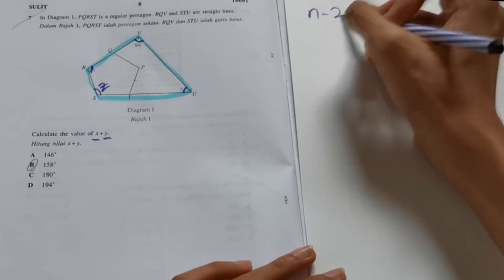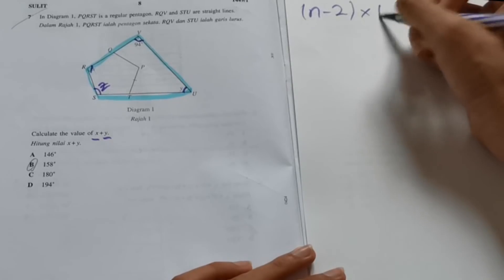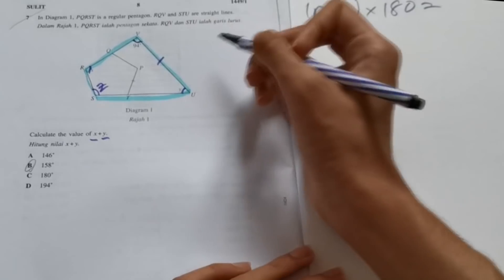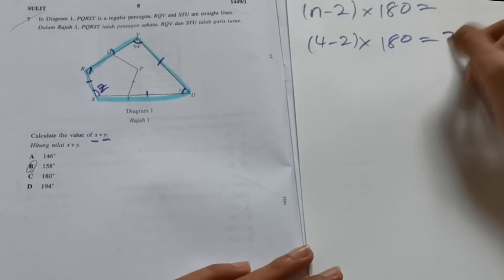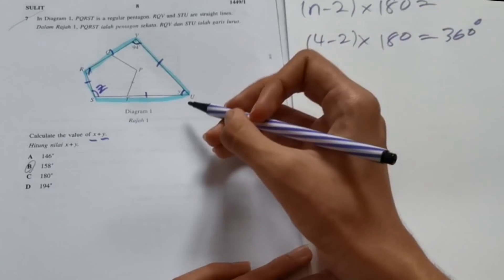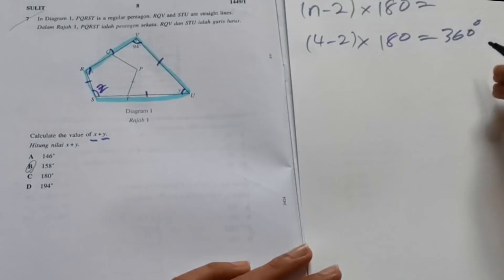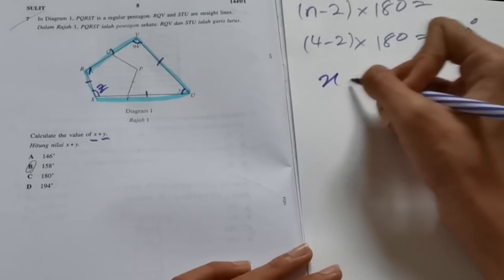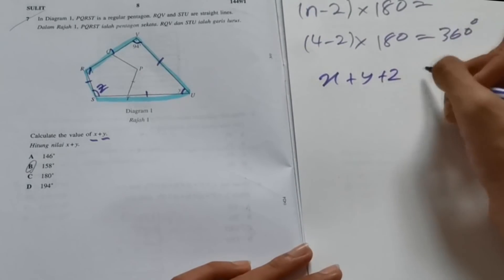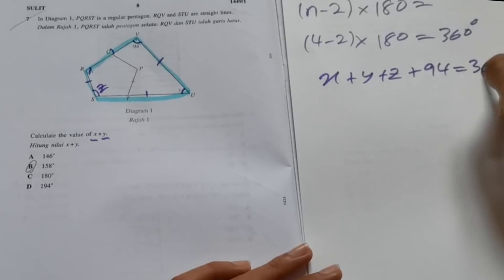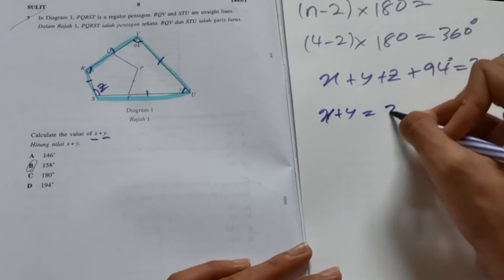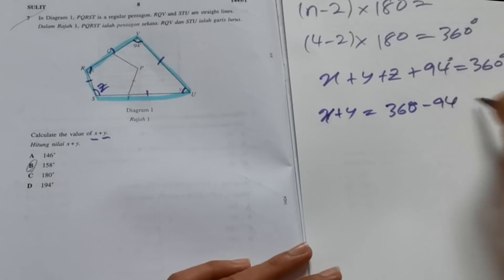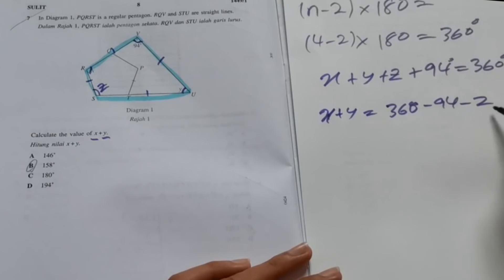In order to solve this, first you need to use the formula n minus 2 times 180. n is the number of sides, which in this case is 4. So 4 minus 2 times 180, we get 360 degrees. So the total internal angle of this shape is indeed 360.